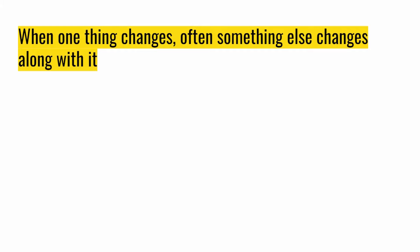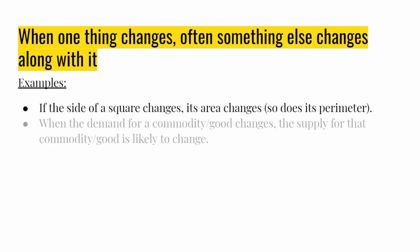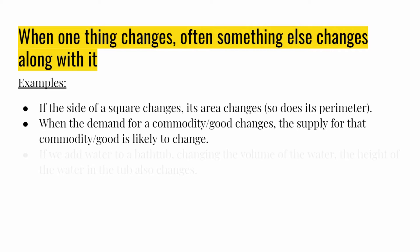We're at the beginning of Module 4, which is this thing called Related Rates. Why do we care about related rates? Using your everyday experience, you can imagine that oftentimes when one thing changes, it affects something else and creates a change in that other thing along with it. For example, if the side of a square changes, then its area and its perimeter are going to change. When the demand for a commodity changes, the supply for that commodity also changes — that's supply and demand from basic economics.